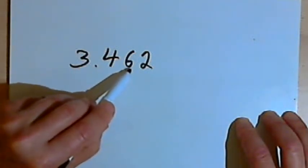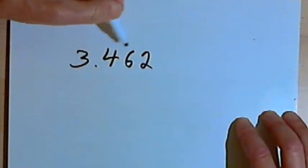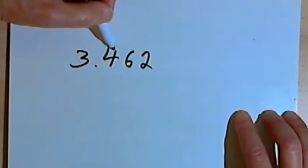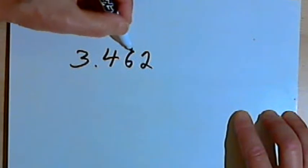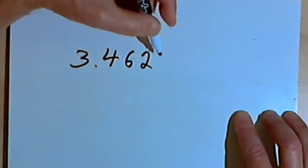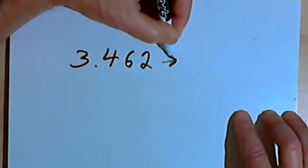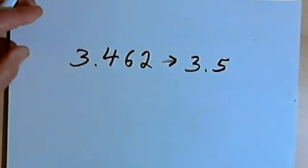If it's not, if it's less than 5, I'm going to drop any digit to the right of the decimal place that I want and just leave the rest of the number as it is. Since I have a 6 in that second decimal place, and that's 5 or greater, I'll round this number up and it's going to become 3.5.